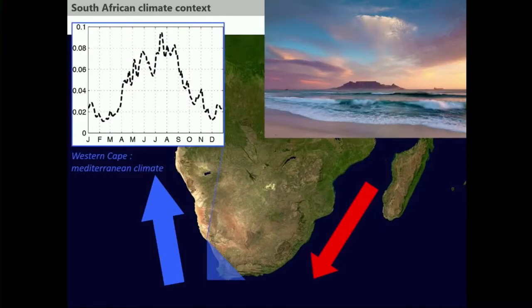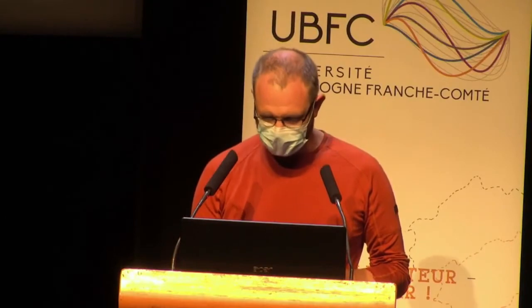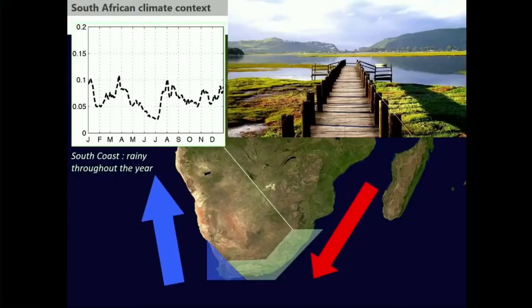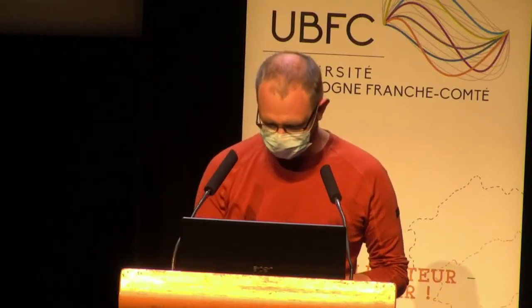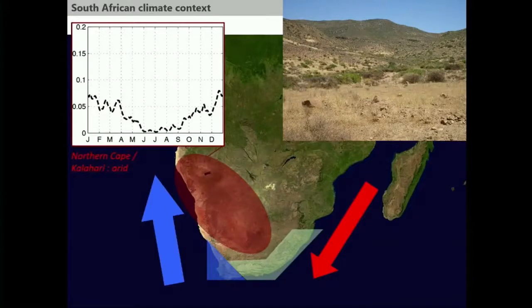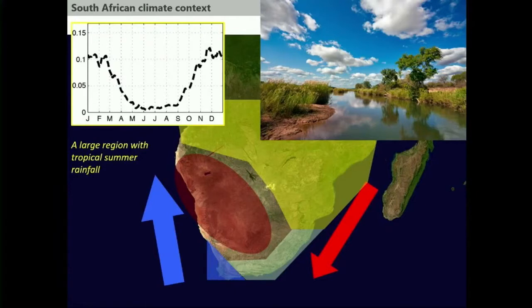The southwestern tip of the continent has a Mediterranean climate with dominant rainfall in winter — from June to September. Along the south coast, you have rainfall throughout the year, because of the influence of the warm current bringing moisture and topographic ascents that cause water to precipitate. On the northwestern part of the country, conditions are almost desert-like, with mostly arid conditions and just a few showers during the austral summer season. For the rest of the region, there is a big area under tropical influence with abundant rainfall from November to February.